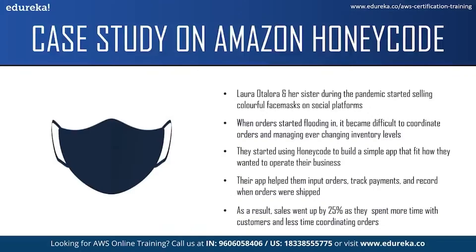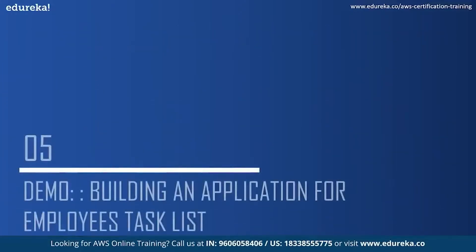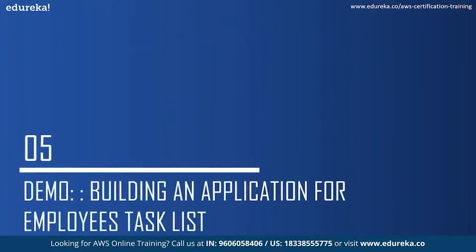Their Honeycode application allowed them to input orders, track payments, and record when the orders were shipped. As a result, sales went up by 25% because they were able to spend more time with customers and less time coordinating orders. Now let us move on to the demo part and build an application for an employee task list.